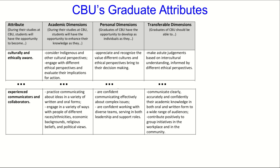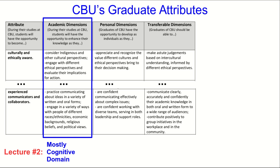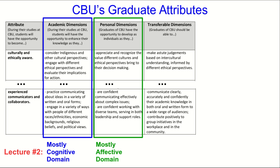One thing to be aware of is that there are already some goals, and to a lesser extent objectives, that are pre-written for you — and that's lists of graduate attributes. Here's an extract of CBU's institutional graduate attributes, and you may also be aware that the programs you teach in also have graduate attributes. Part of this is mostly things we would say are in the cognitive, or thinking, domain, and part of this is mostly in the affective, or emotional, or social domain.